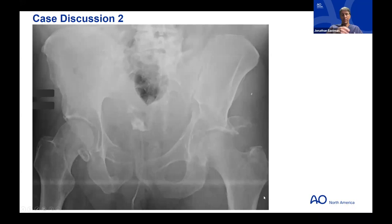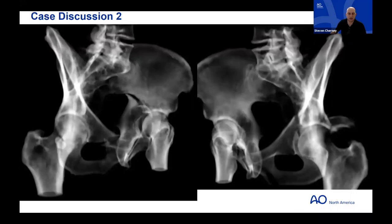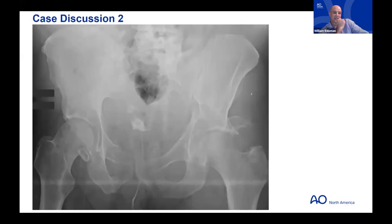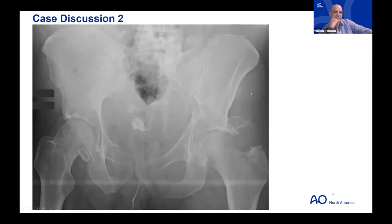Will adds: sometimes the ischial ramus fracture is sneaky, and Letournel's book describes all the variants that could possibly be out there — if fellows haven't sat down and really read it, all the variants are in there. Personally, Will moved away from getting Judet obliques early on because getting techs to shoot good quality films was difficult, and contrast in the bladder was often in the way. It's a personal decision that each surgeon has to work through.